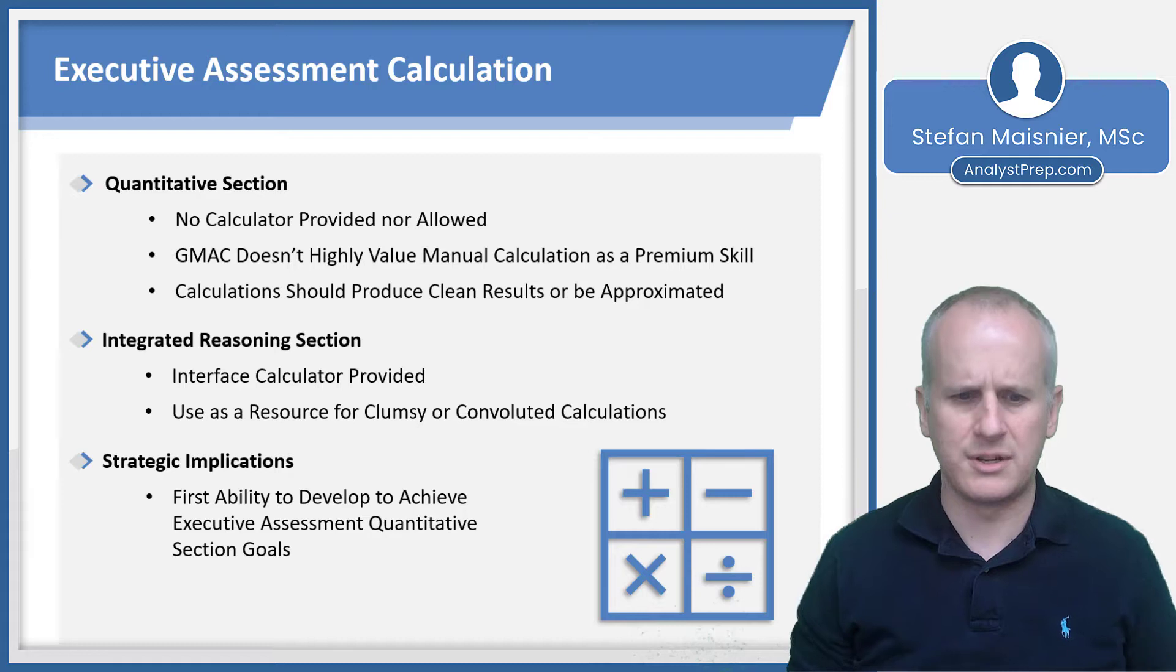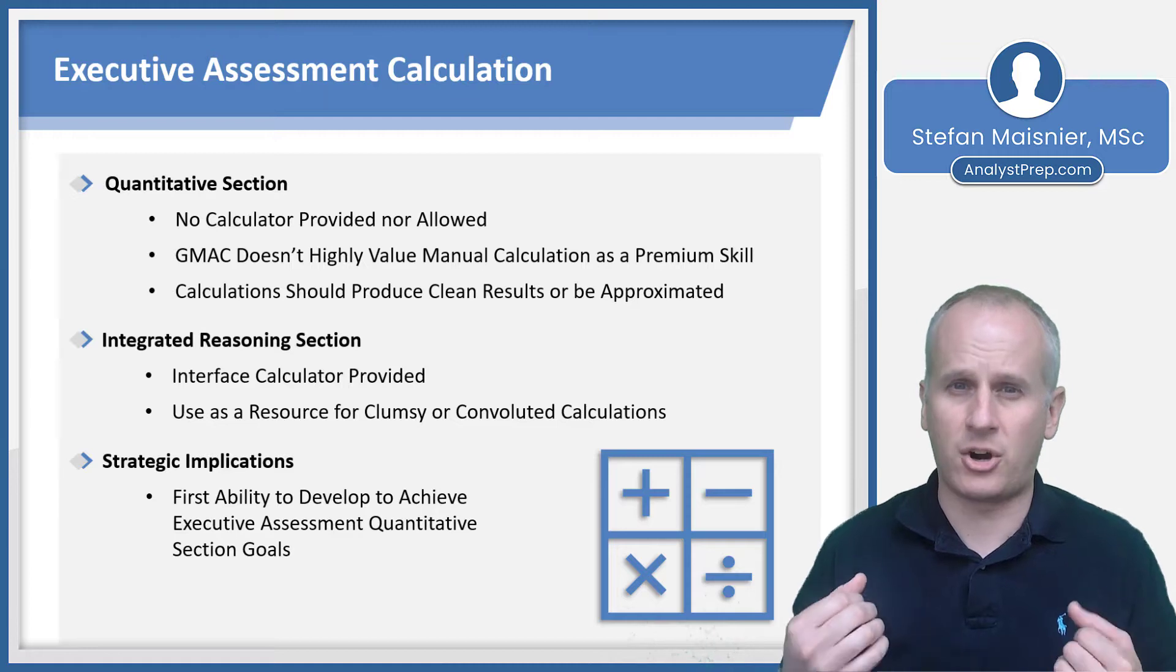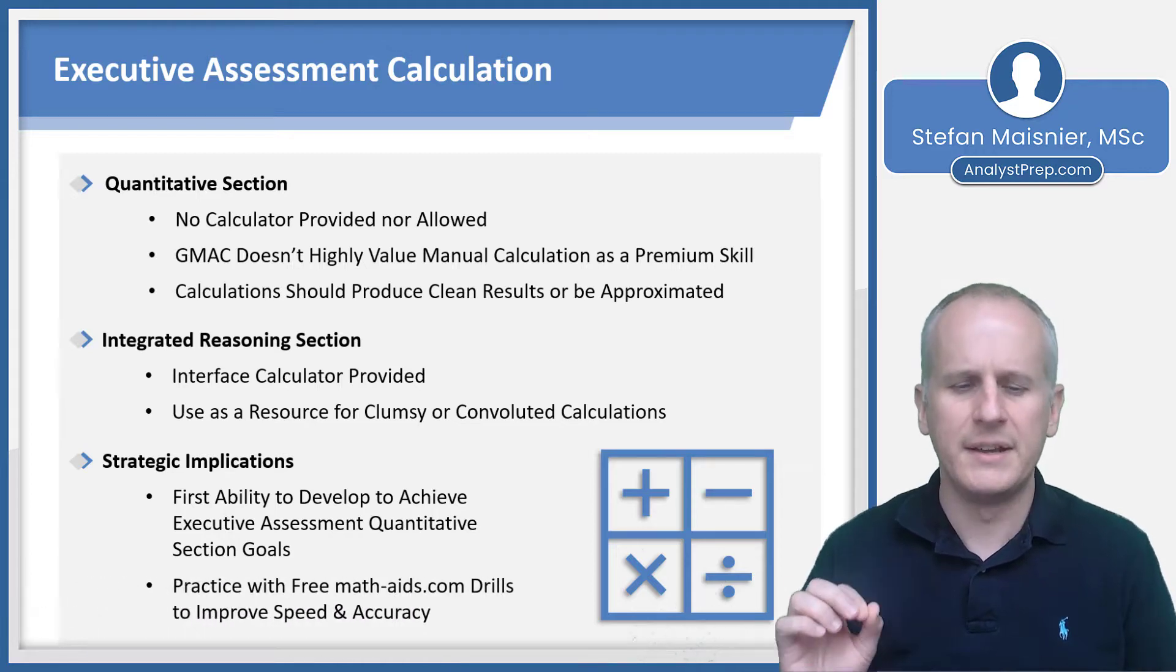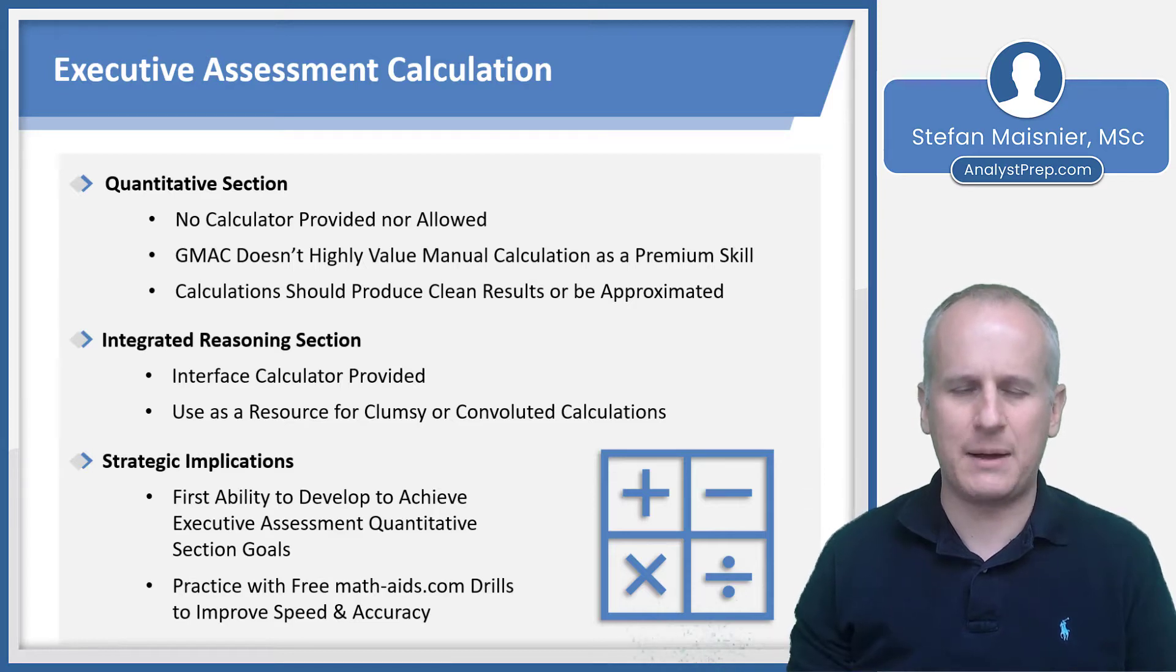The strategic implications: the ability to manually calculate is basically the first skill that you need to develop in order to achieve your quantitative section goals. You have to be able to manually do multiplication, division, addition, subtraction. And then there's going to be some manual manipulations of things like exponents and radicals and fractions and decimals that are just baseline abilities that you're going to need to develop. You can practice on math-aids.com with free drills that will allow you to improve your speed and accuracy in manual calculation.